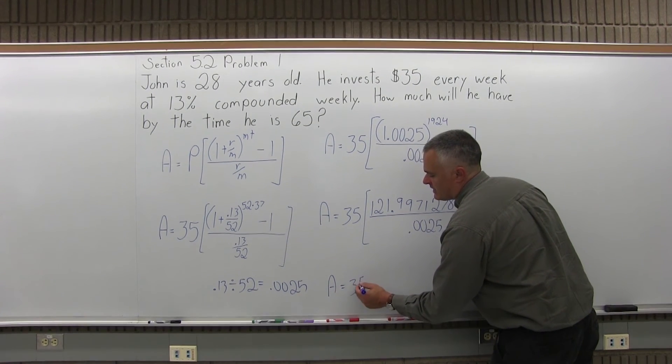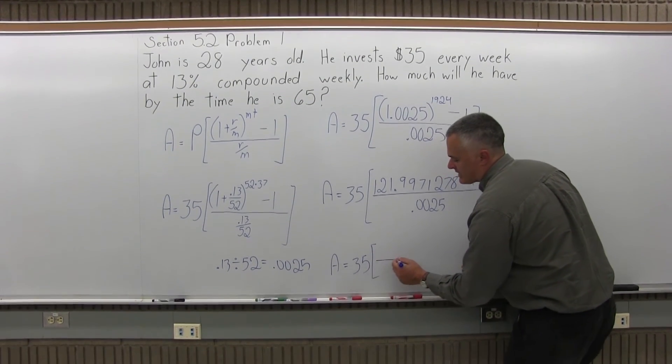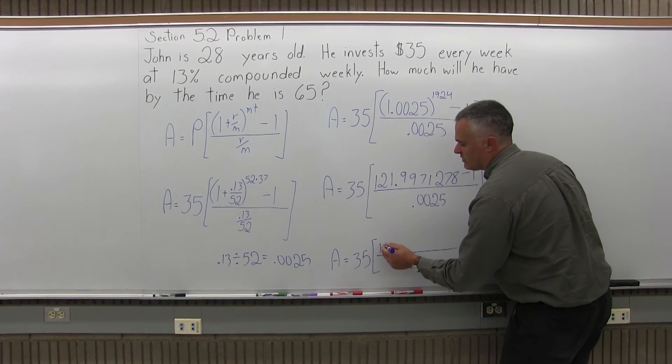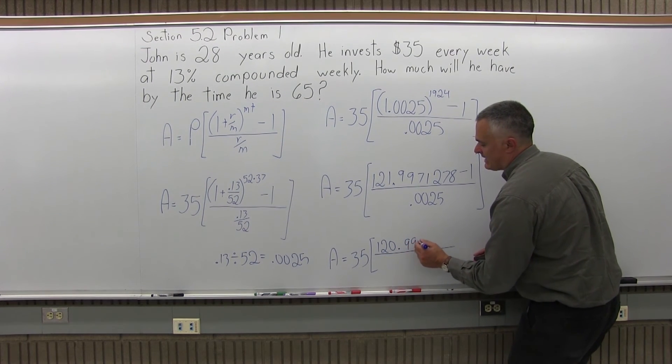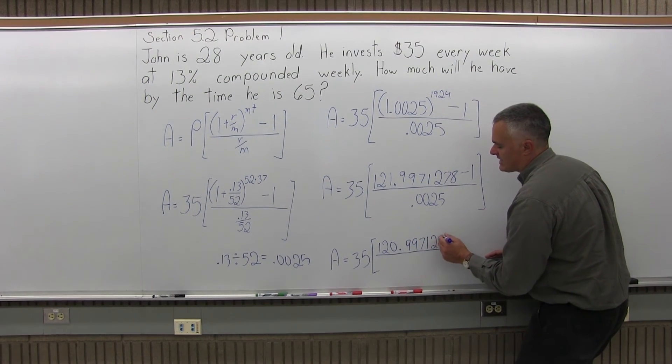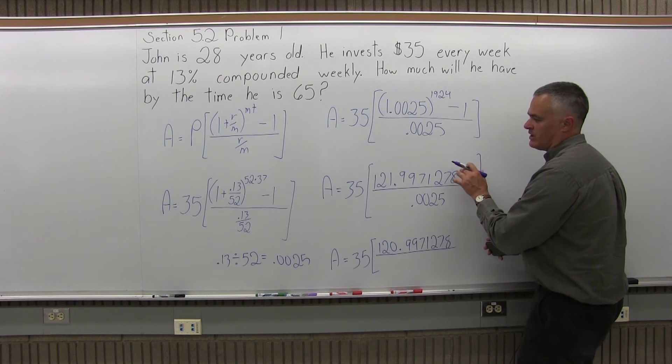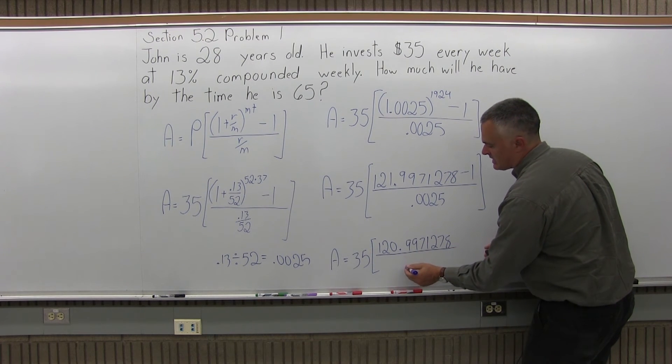So A is 35 times some brackets, and now on the top of the brackets you have 120.9971278, after you deal with the minus 1 that was there from the previous step. Same denominator, .0025.